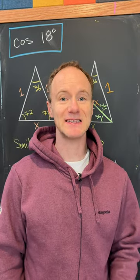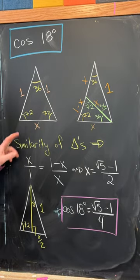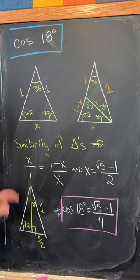Let's look at a nice way to calculate the exact value of the cosine of 18 degrees. So it all starts with a 72-72-36 triangle. We'll say that these two sides have side length one, and then down here we've got side length x.